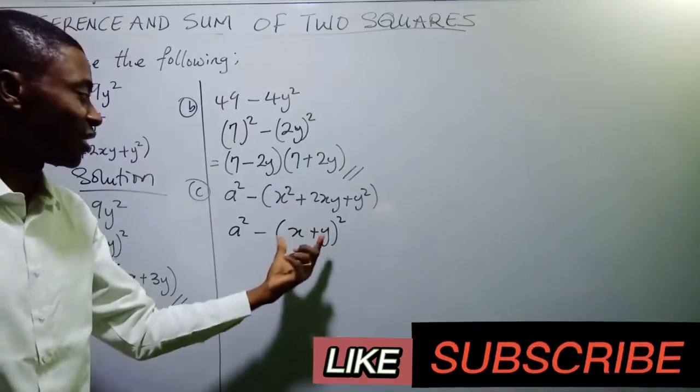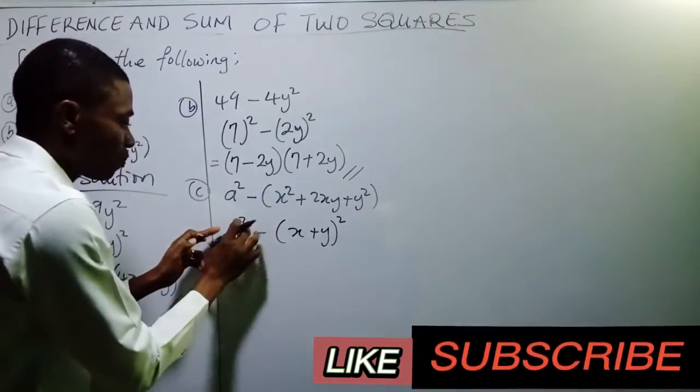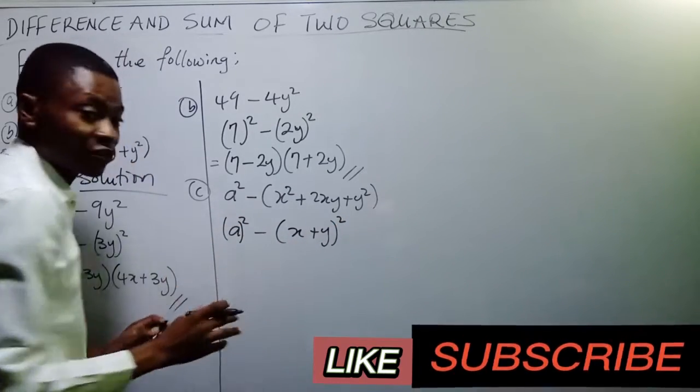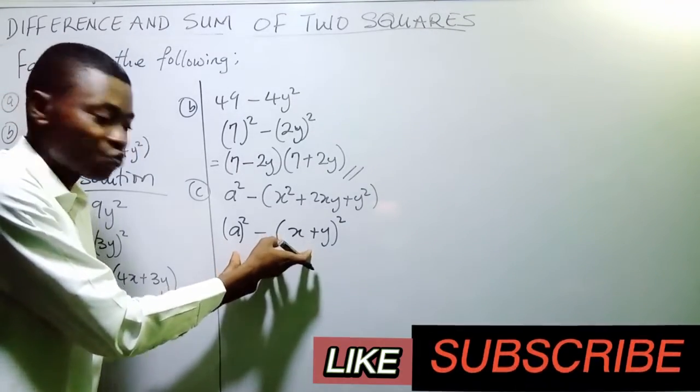x plus y twice. If I should expand this, I'm going to get this back. Now, comparing this, a square and x plus y square, apply difference of two squares to them, because both of them are in the form of difference of two squares.